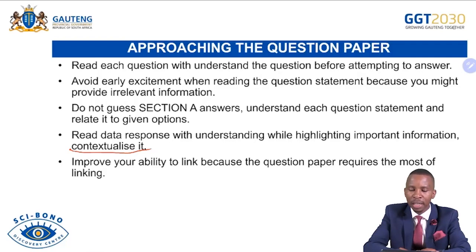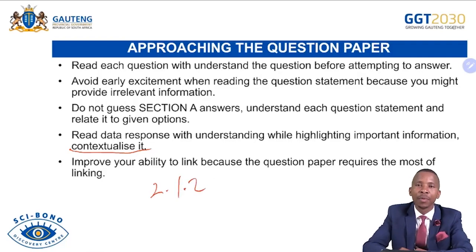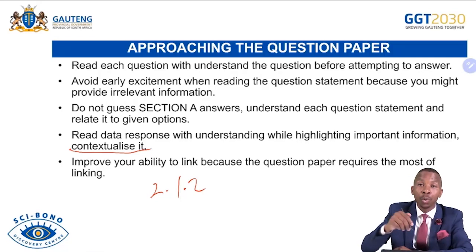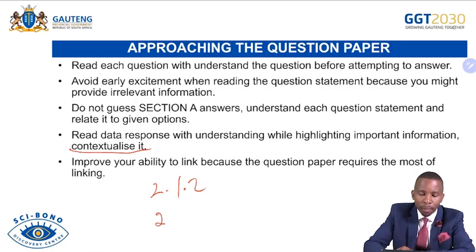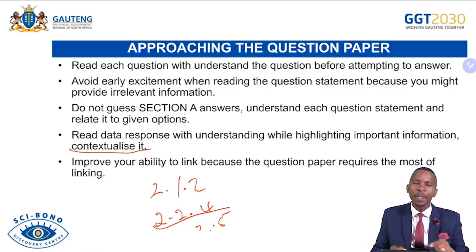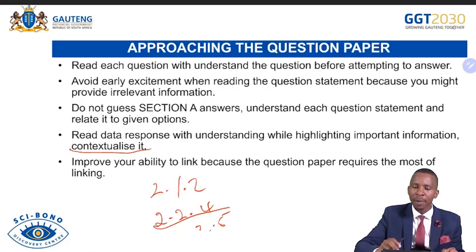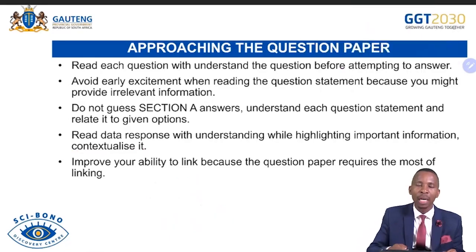Improve your ability to link, because the question paper requires a lot of linking. In Question 2.1.2 you must link — there is one action verb and two concepts that should be related. Also in 2.2.4 and 2.2.5 you link. If you can improve the ability of linking, it will be easy to get questions correct, because our question paper demands the most linking.